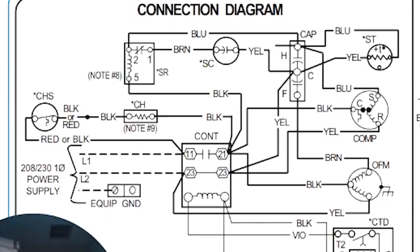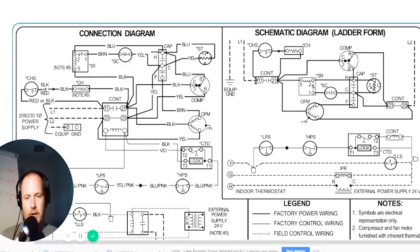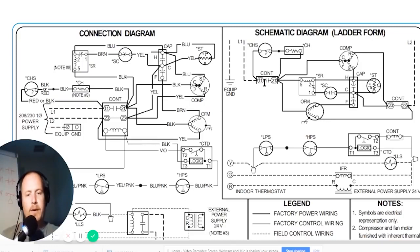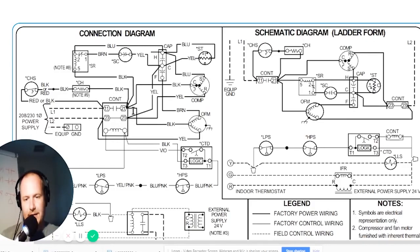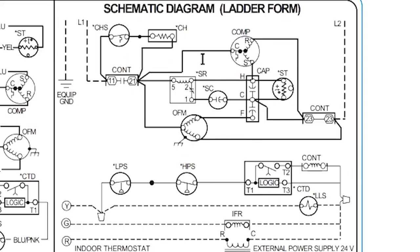We only show the contacts up on the high voltage side, separate from the contactor coil, because this is a ladder schematic style diagram. Over on the connection diagram on the left, the contactor has everything all together — the coil, the bar across it (this is a single-pole contactor), and the contacts. The contacts are numbered, so you can reference connection point 11 on the contactor whether looking at the schematic or the connection diagram — they're the same thing.